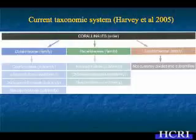Then you can use the tetrasporangial phase to identify the name. Currently, we have three families in the Corallinaceae. Corallinaceae is the one that has uniporette, Hapalidiaceae has multiporette, and Sporolithaceae has sori. It's kind of an easy way to identify things. There are several families that have three or four features to identify themselves, like tetrasporangial-bearing conceptacles that are uniporette, zonately arranged tetraspores, or apical pore absent.